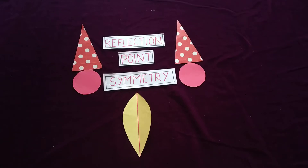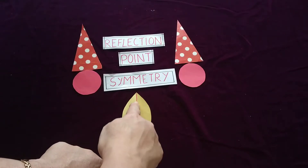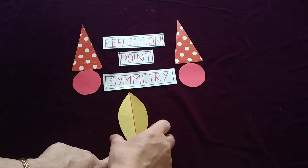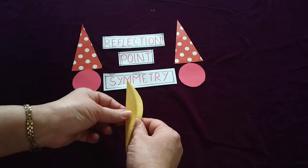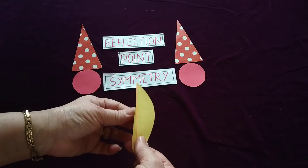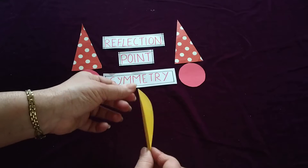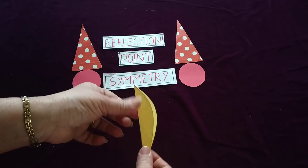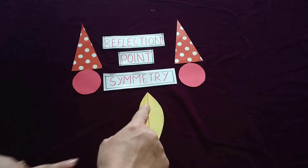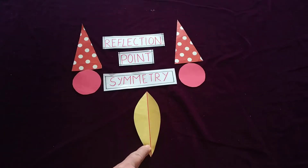A line divides a figure in two halves such that one half is the mirror image of the other one. Here you can see that this line divides the figure in two equal halves such that the other part is the mirror image of the first one, or we can say the two parts overlap and coincide with each other. So this is the line of symmetry.